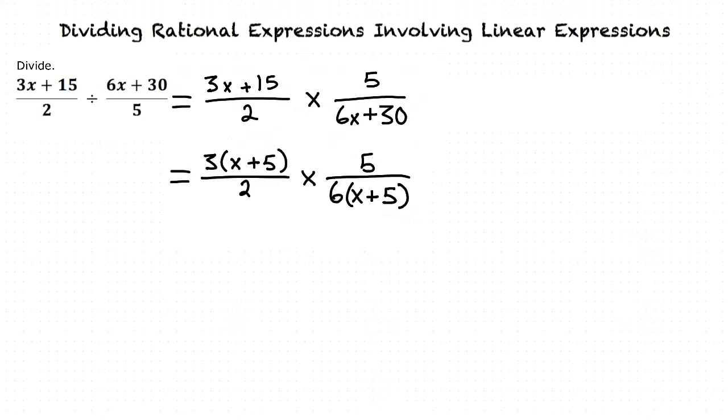Our next step is to cancel out common factors. In this case, since 6 is divisible by 3 and (x + 5) is divisible by (x + 5), those are our common factors.